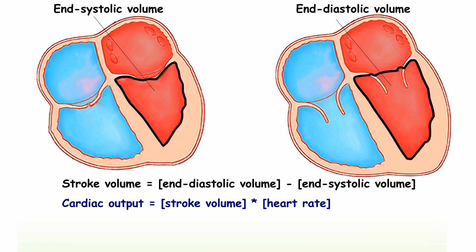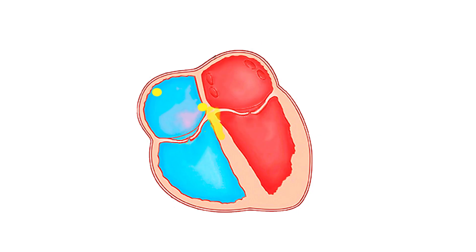Heart rate multiplied by stroke volume is called cardiac output. The cardiac output is usually expressed in liters per minute — it is simply the amount of blood pumped by the heart per minute. It is the product of the heart rate, which is the number of beats per minute, and the stroke volume, which is the amount pumped per beat.